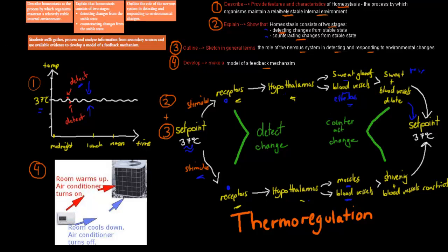In terms of developing a model for the feedback mechanism, we can use the air conditioner as an analogy. The aircon works quite similarly: if we want 18 degrees Celsius in our room, the aircon will blow more cold air if the temperature increases, to bring it back down. And it will stop blowing cold air if the temperature goes too low, to help bring it back to 18 degrees. The aircon works in a similar fashion to how thermoregulation works in our body.